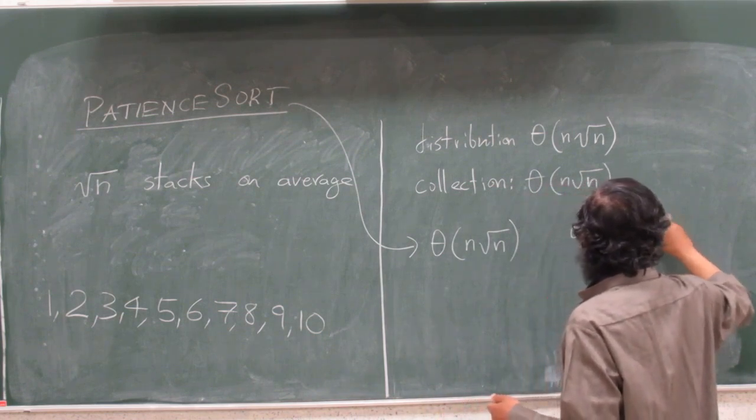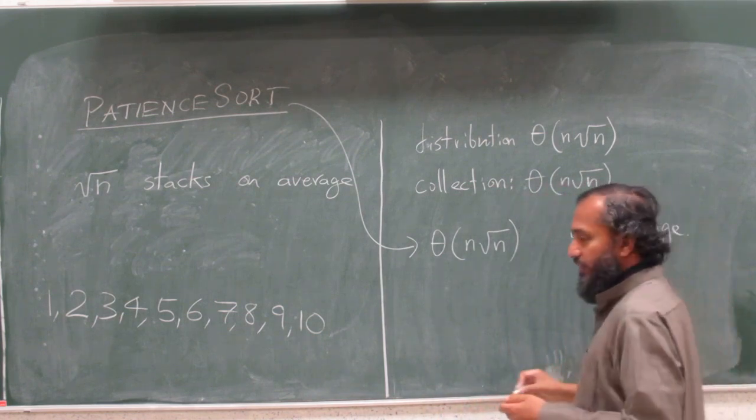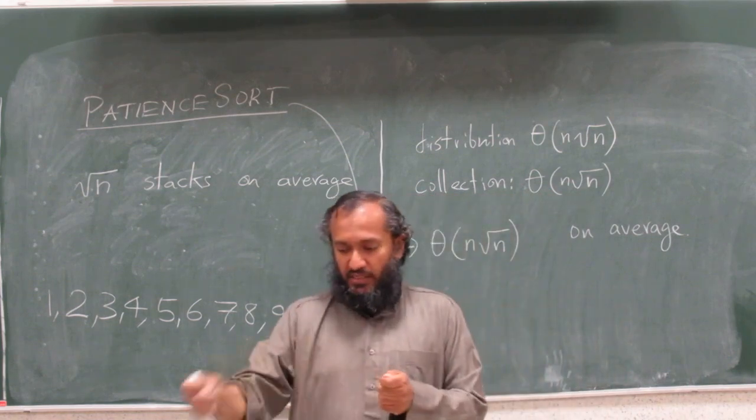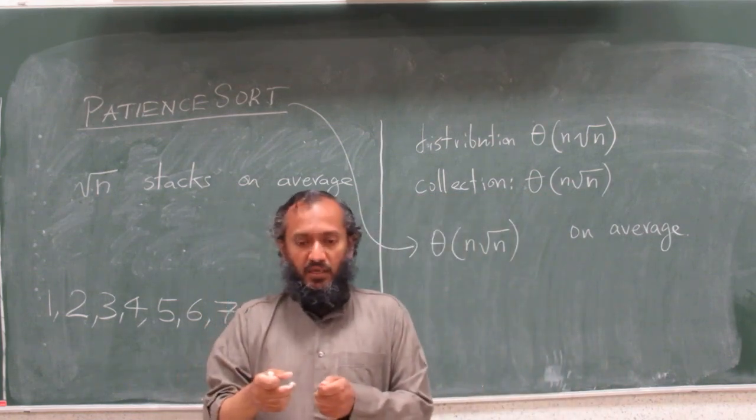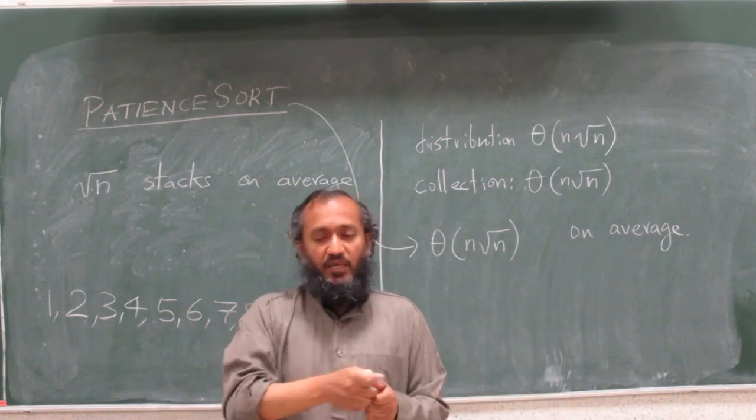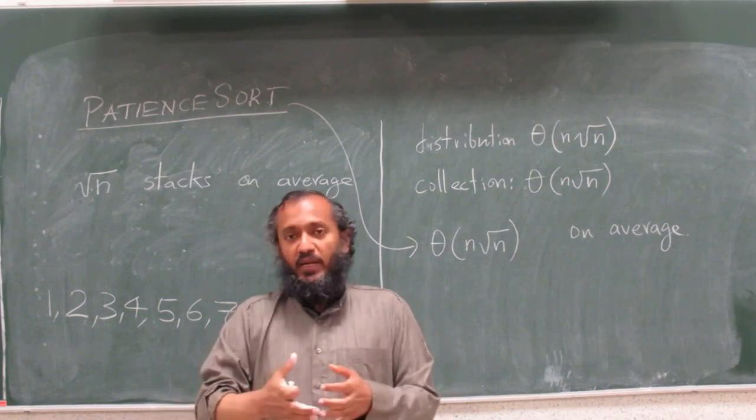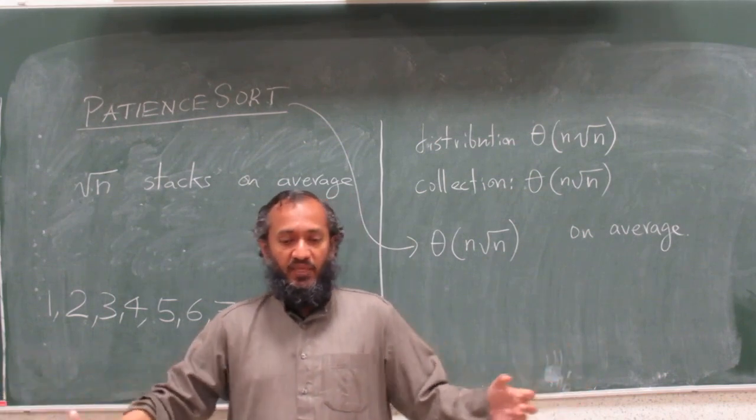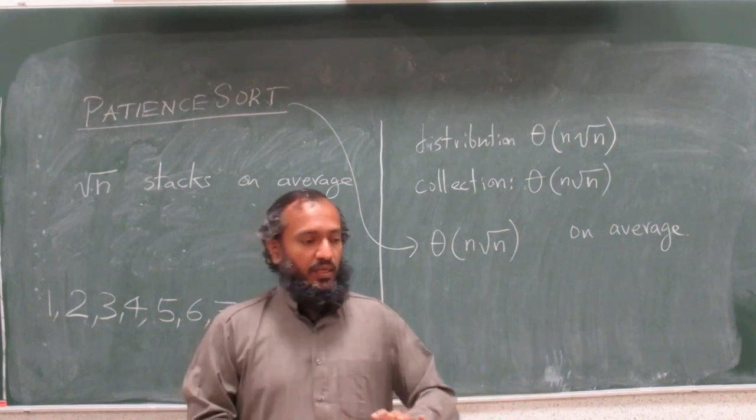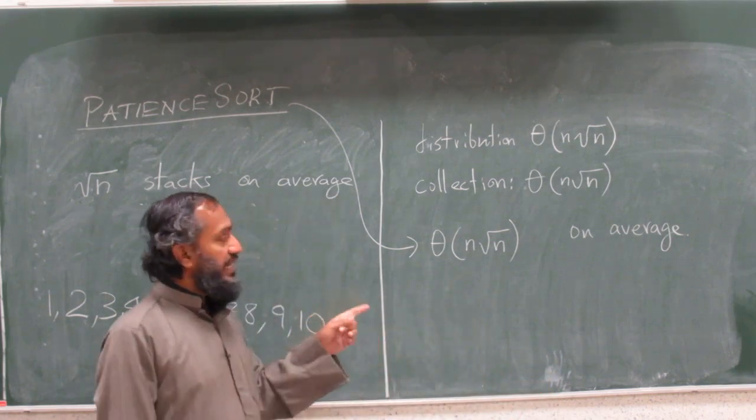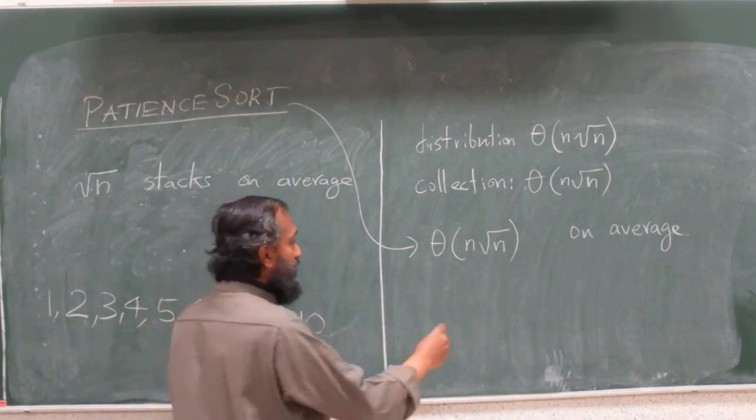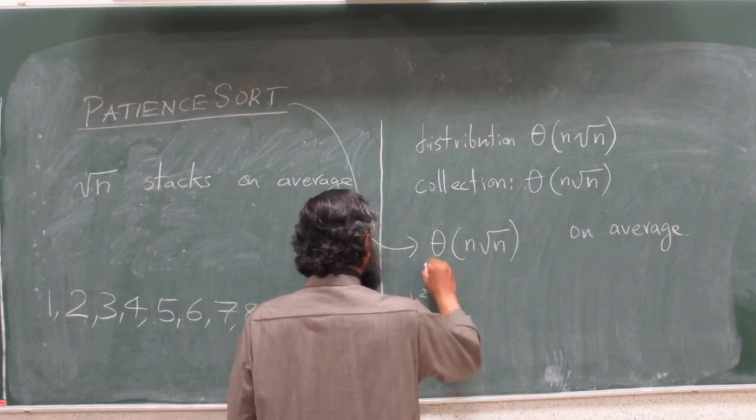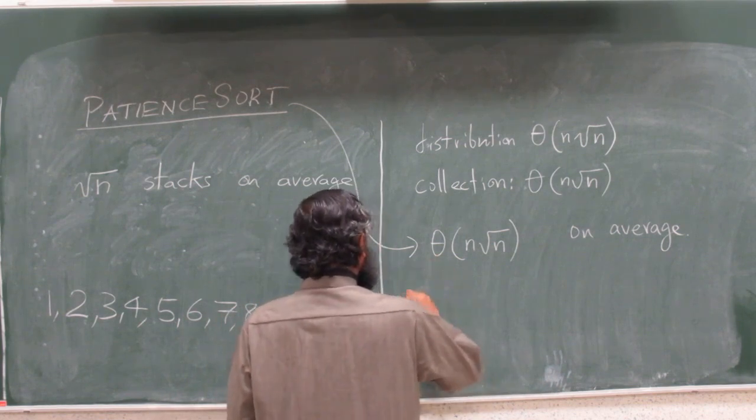Worst case, of course, if you have worst cases such as, for example, if the array was close to being sorted - you put a one, then you cannot put a two on top, you have to make a new stack, a new stack - you might have close to being linear number of stacks if the array was already close to being sorted. But on average this performance is n square root of n, and so it is between n square and n log n.